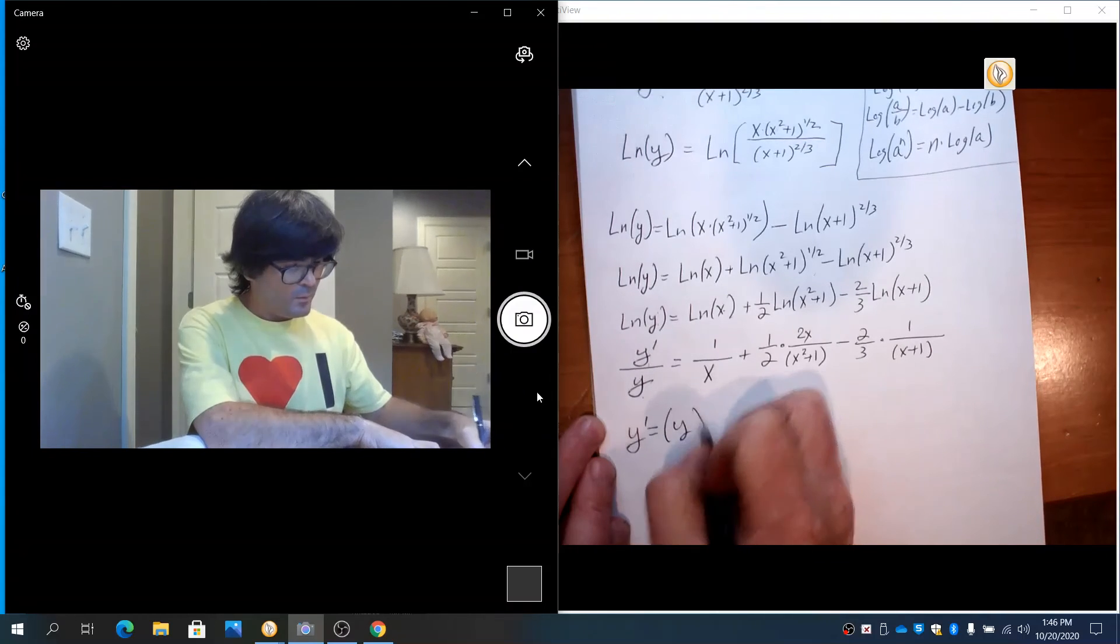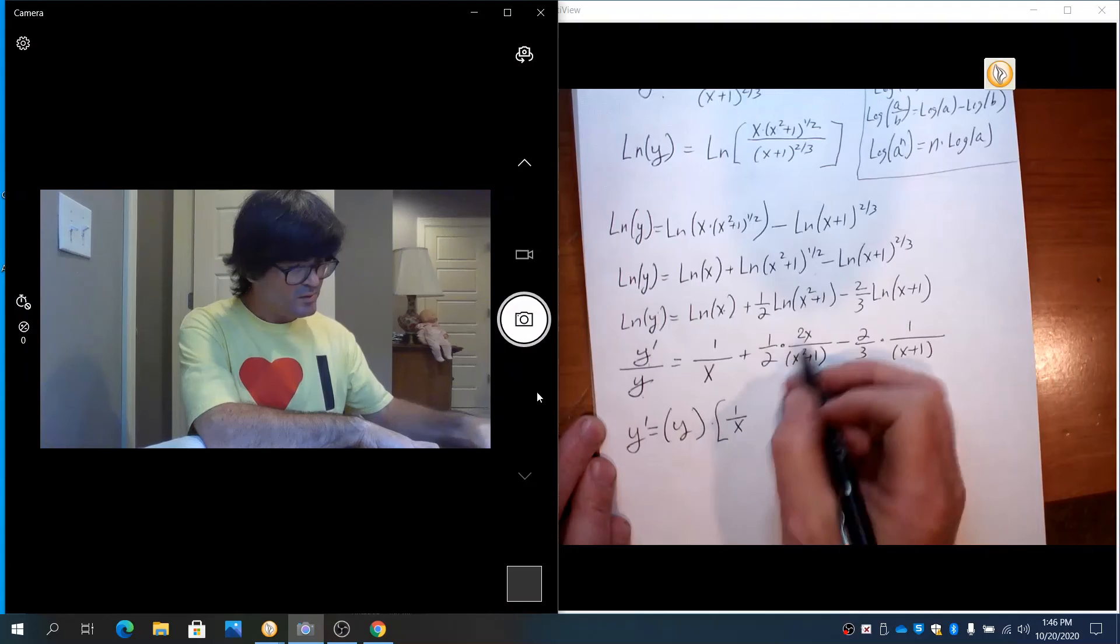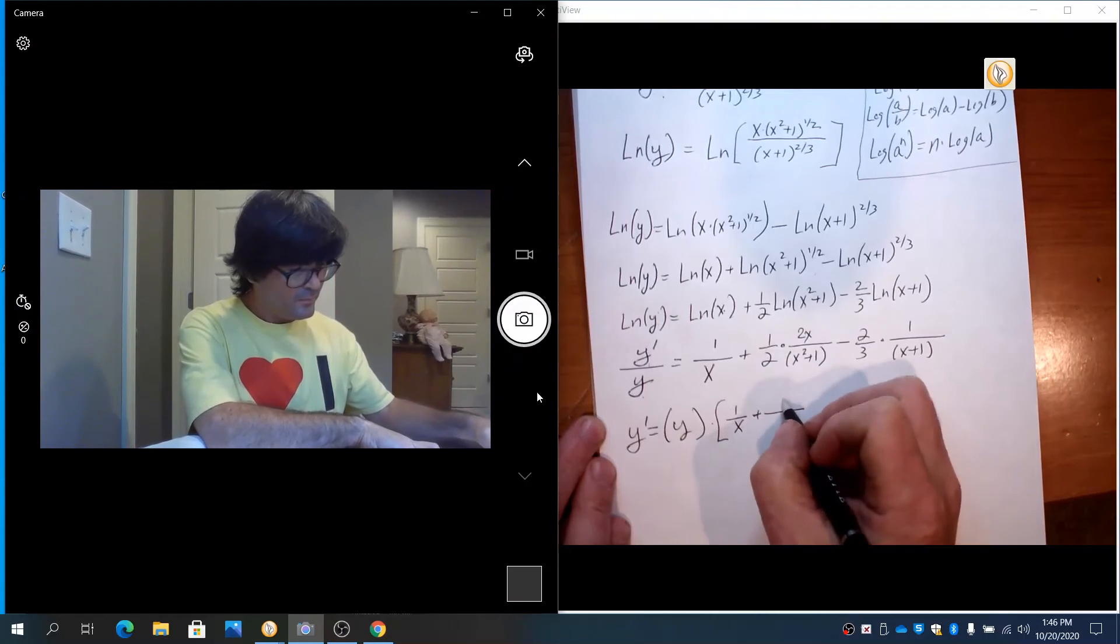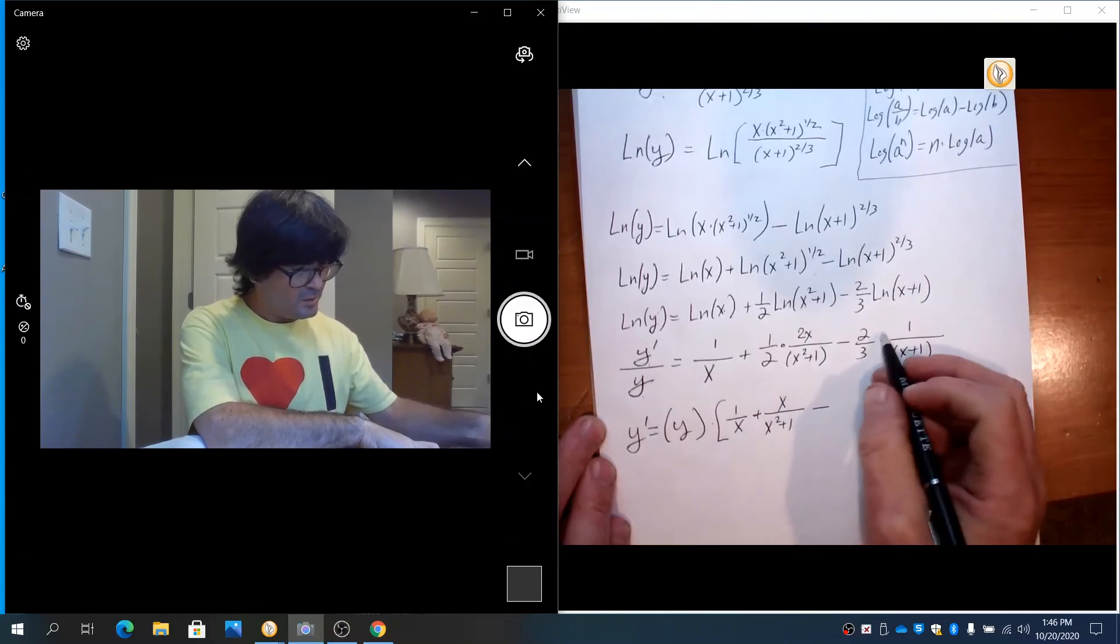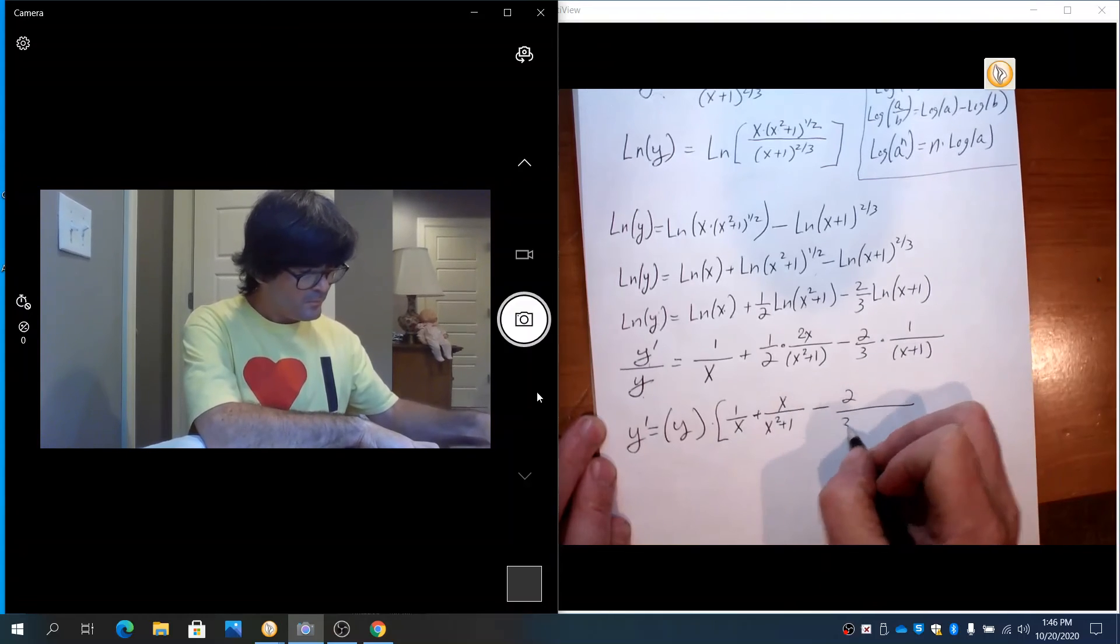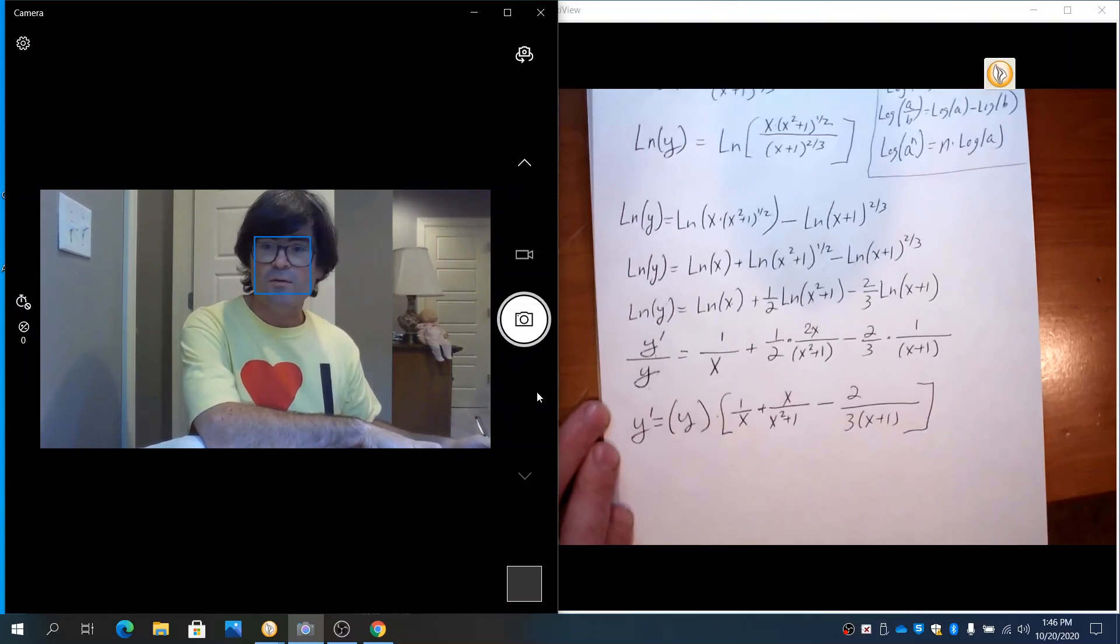I'm going to solve for y prime by multiplying by y. So y prime is y times 1 over x, these two's cancel out, minus 2 thirds.